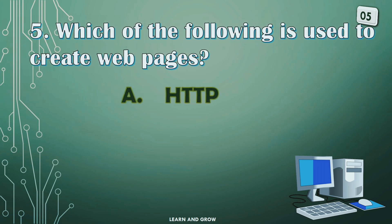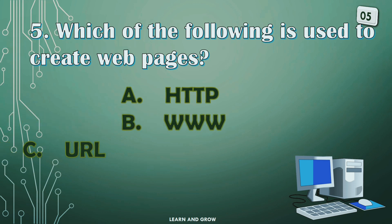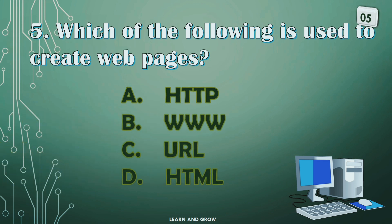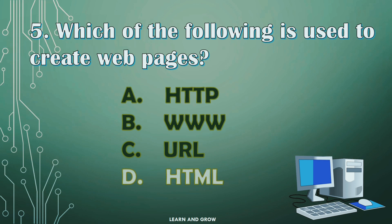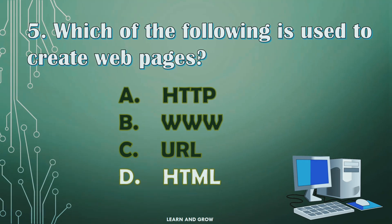Which of the following is used to create web pages? Option A: HTTP, B: WWW, C: URL, or D: HTML. The right answer is Option D: HTML.